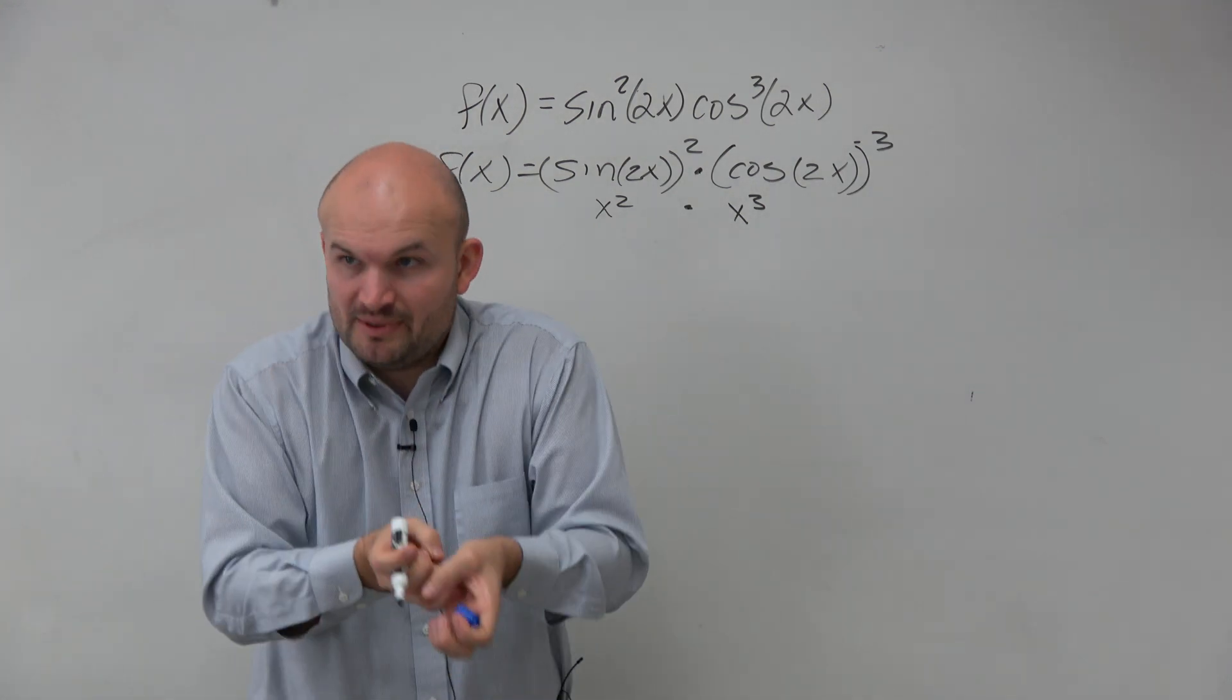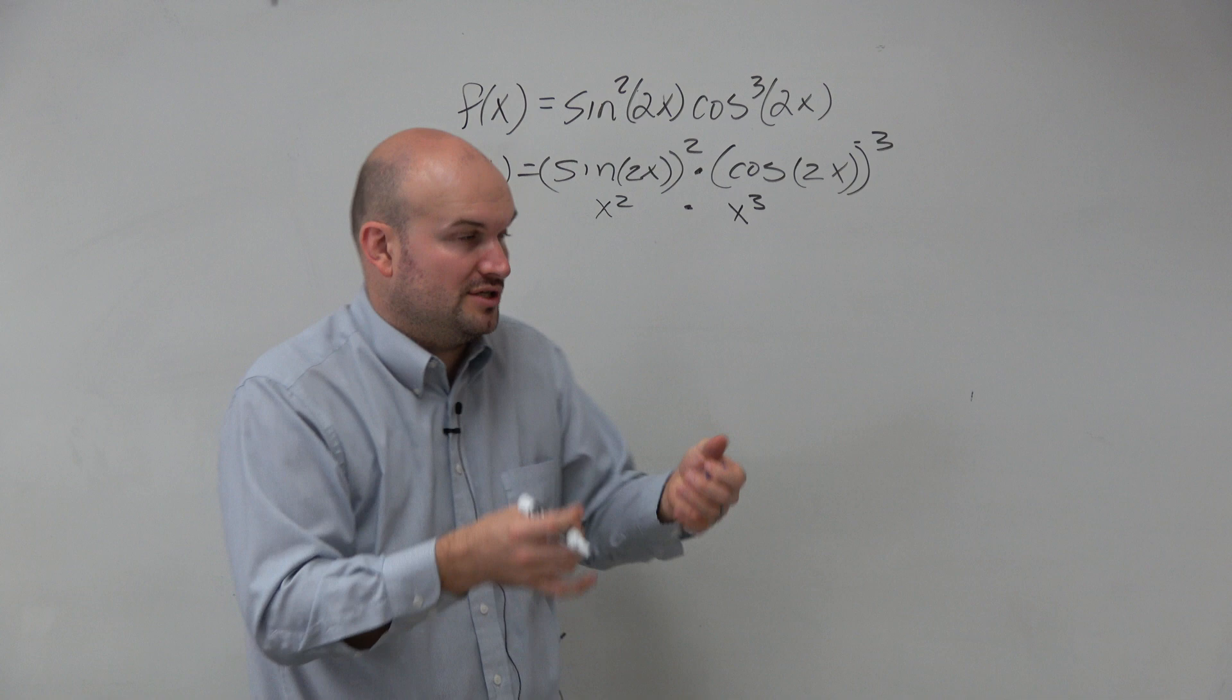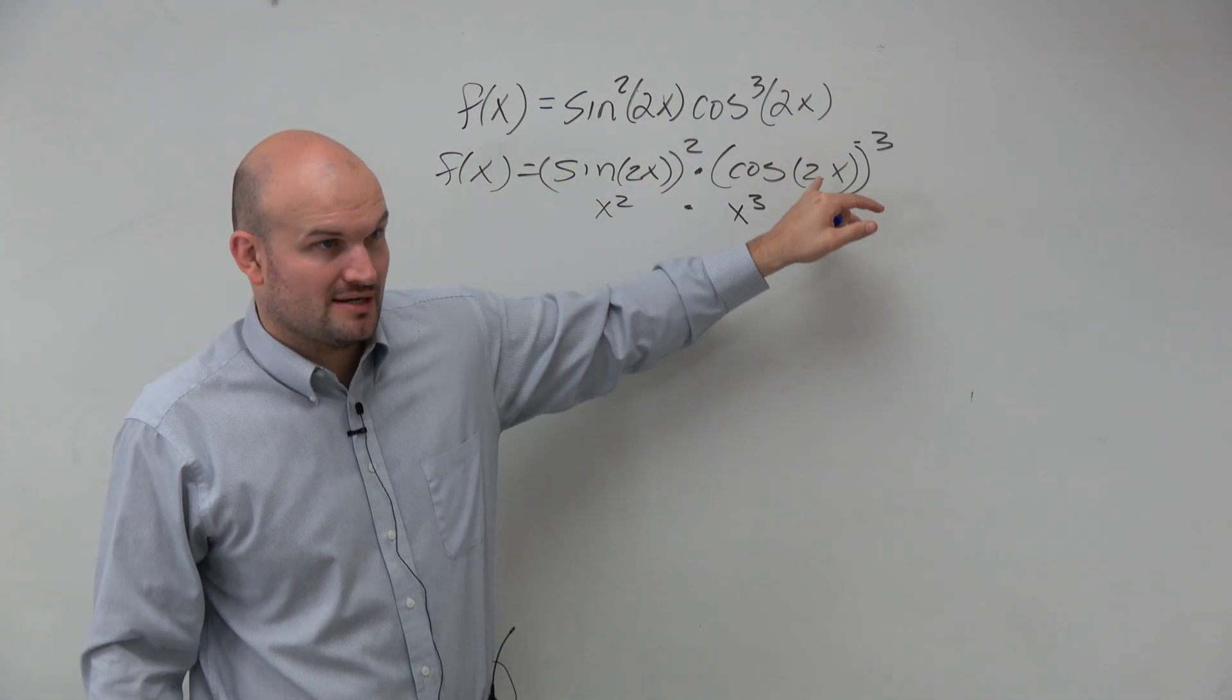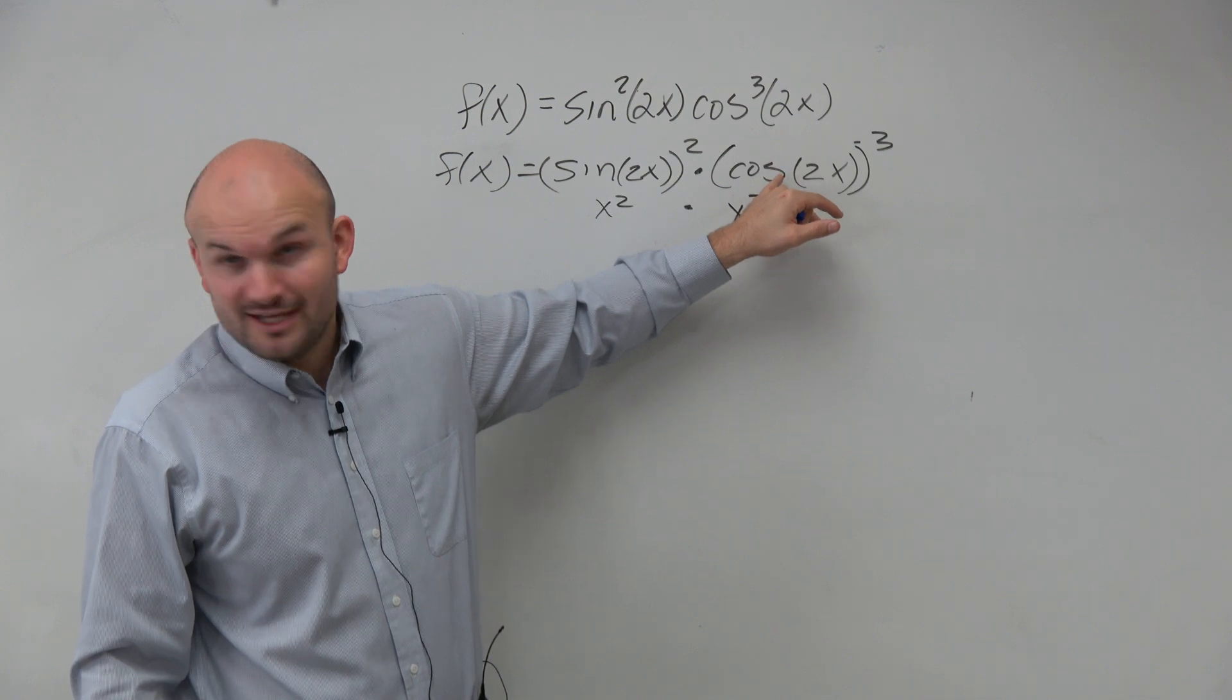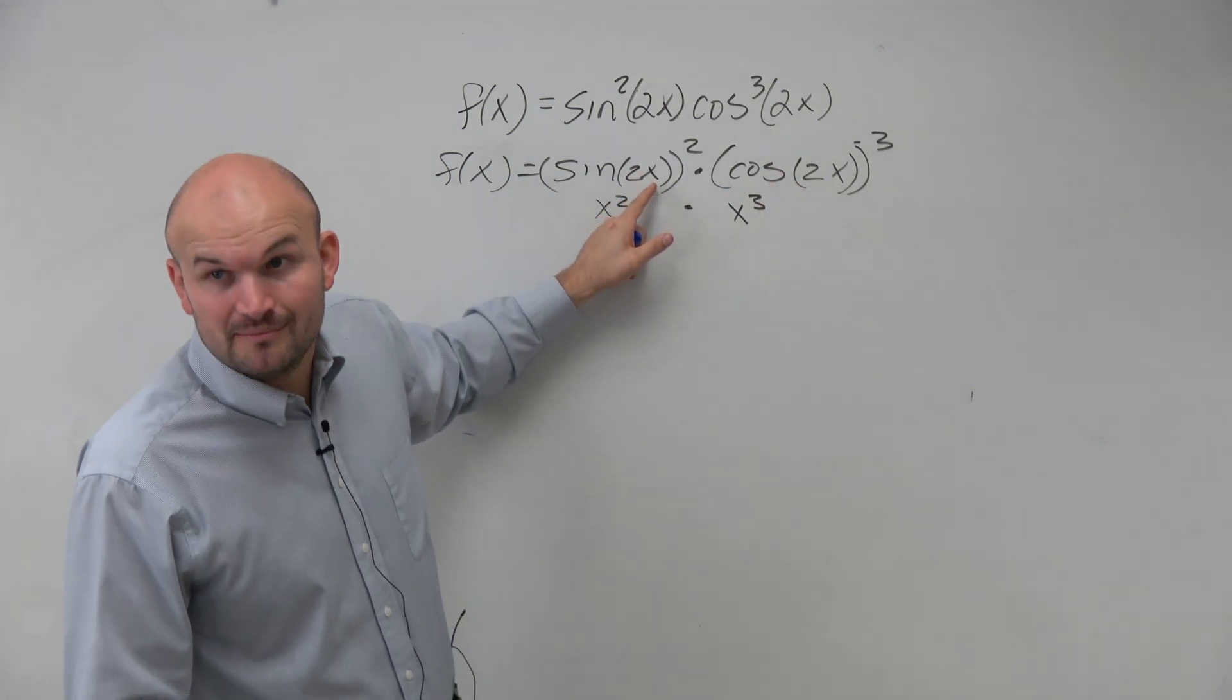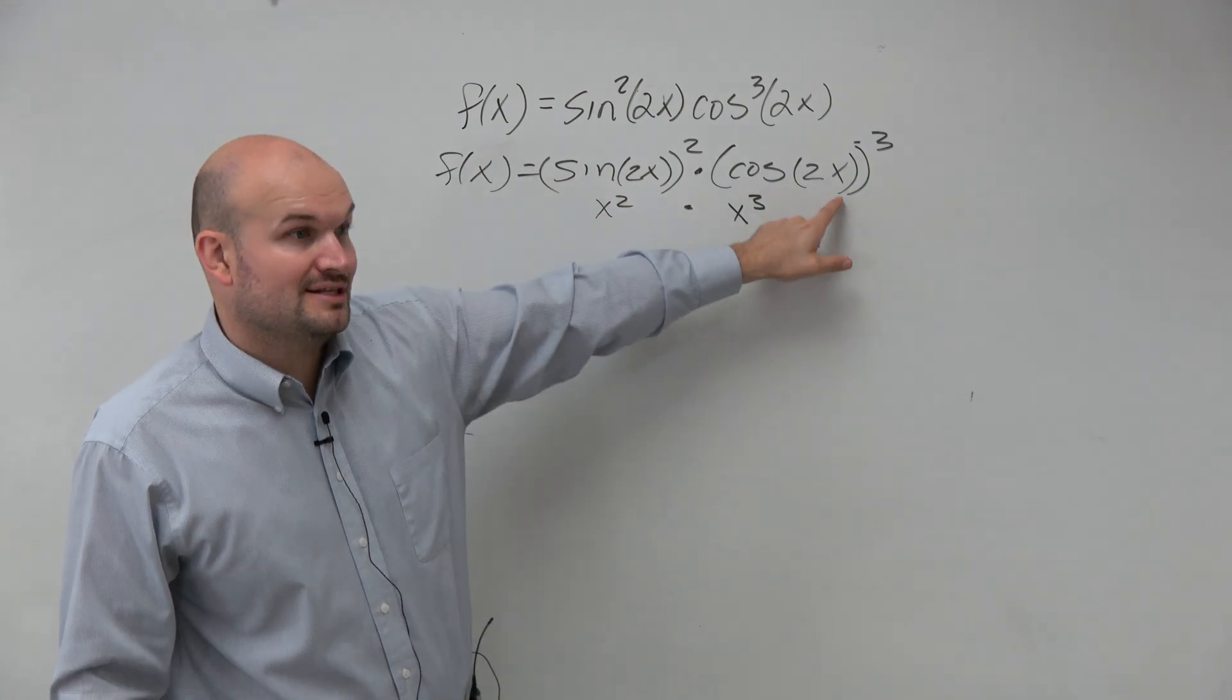Then we work into a little bit deeper. Then we look into the child function. Well, the child function is sine of 2x and cosine of 2x, which unfortunately can also have children, which would be the derivative of inside of them, right? Which would be 2 and 2.